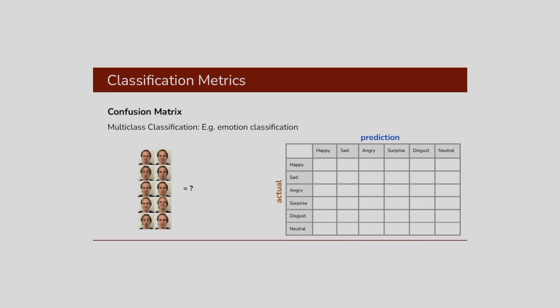Here is another example — multiclass classification for emotion classification. We are considering emotions like happy, sad, angry, surprised, disgust, and neutral. We have shown these actual classes and also the predicted classes. How many times happy is recognized as happy, sad as sad, or angry as angry — this we can determine from the classification results. How many times happy is misclassified as sad, angry, surprised, disgust, or neutral — that is the misclassification. We can fill up this table, which is nothing but the confusion matrix.